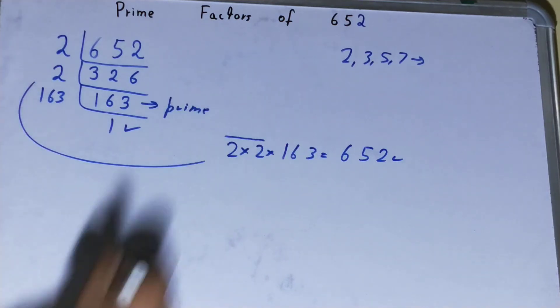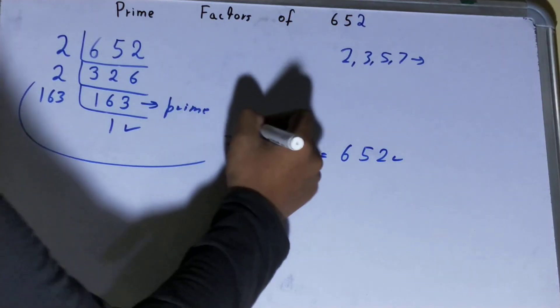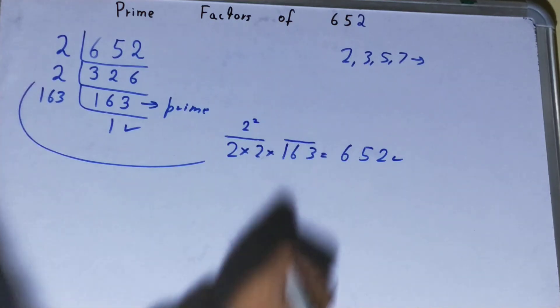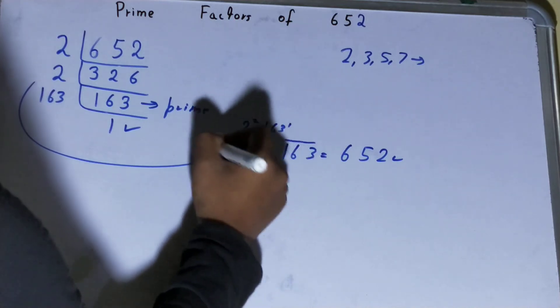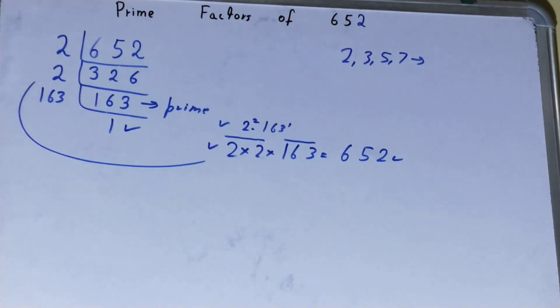You can also rewrite it in a different way. You have 2 × 2, so you can write it as 2 raised to the power 2. You have 1 × 163, so you can write it as 163 raised to the power 1. So you can write it this way or that way. It's up to you.